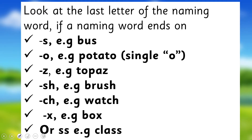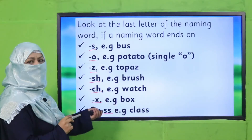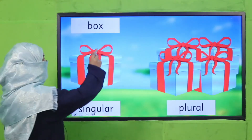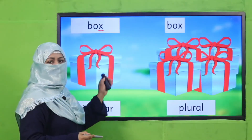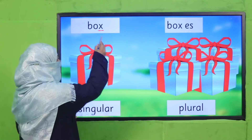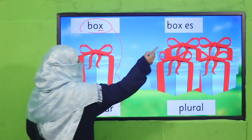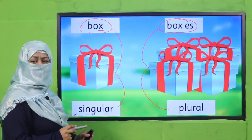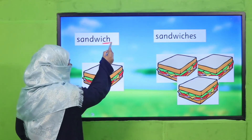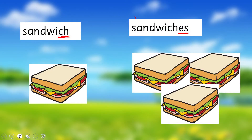There are nouns that end in -s, -o, -z, -sh, -ch, or -x — to make their plural forms we add -es at the end. For example, 'box' ends in -x; if it's one we say 'box,' but if it's more than one we add -es and it becomes 'boxes.' Another example is 'sandwich,' because it ends in -ch, we add -es and it becomes 'sandwiches.' This is what we have learned and practiced so far.